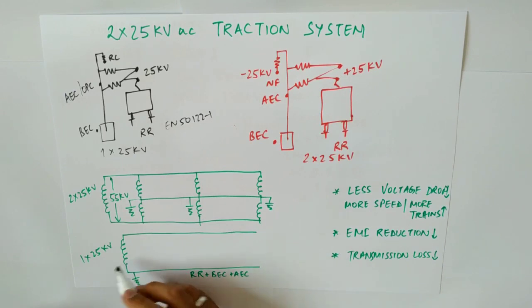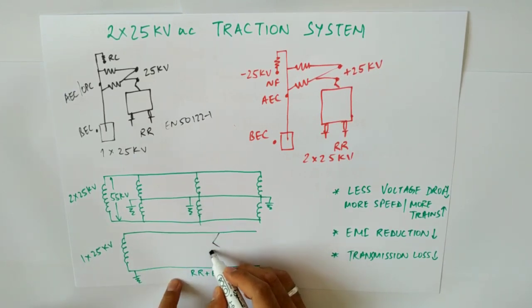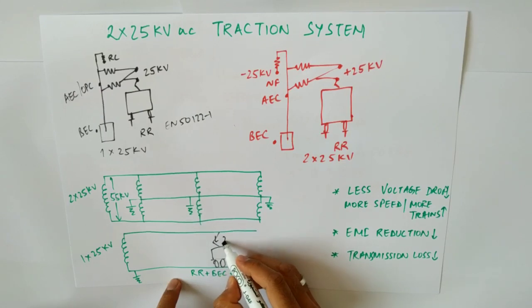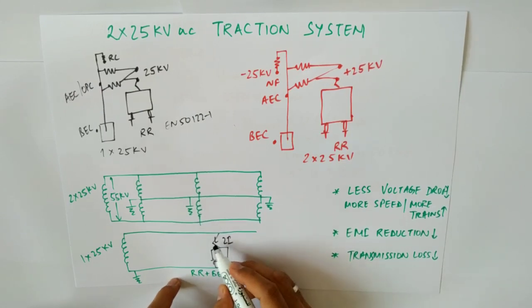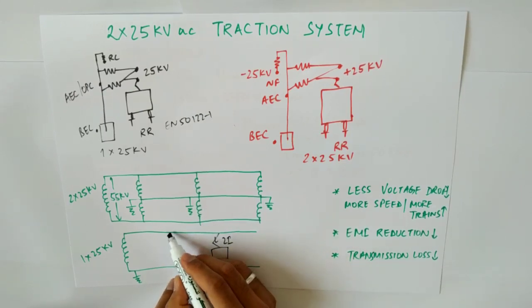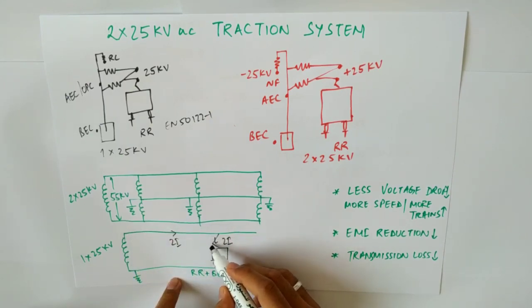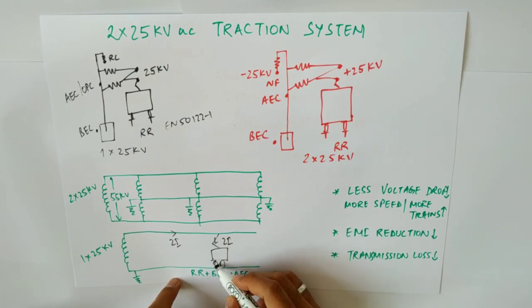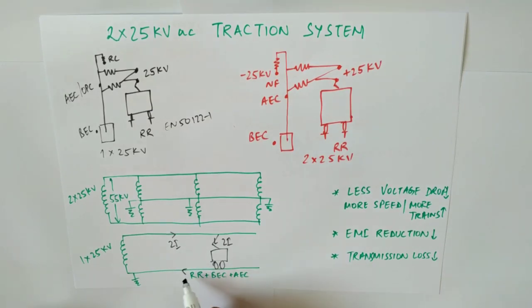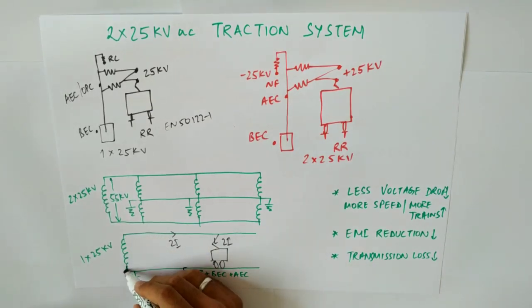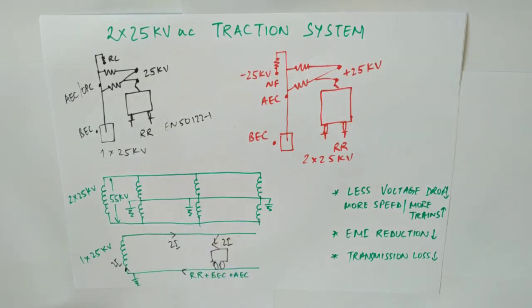In the 1×25 kV system, let us suppose a train requires 2I current. That 2I current flows from the traction transformer, up through the pantograph into the train, and through the axles it returns via the running rails and the return system back to the source. So 2I current flows throughout the entire system.